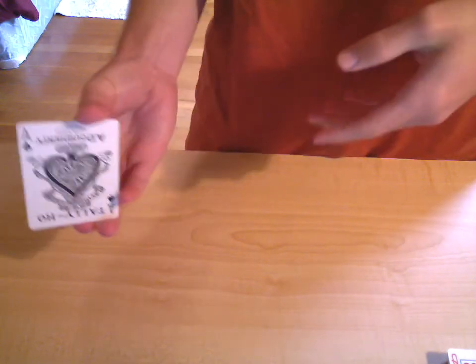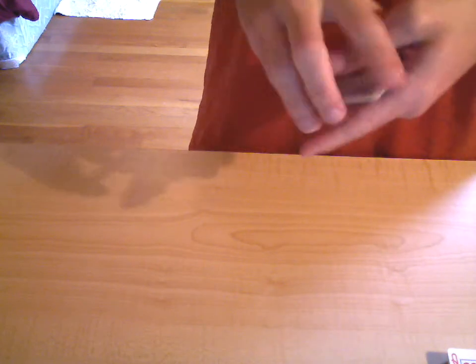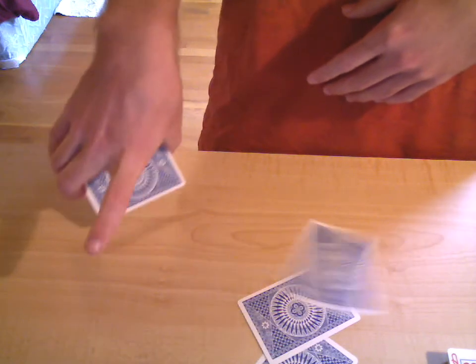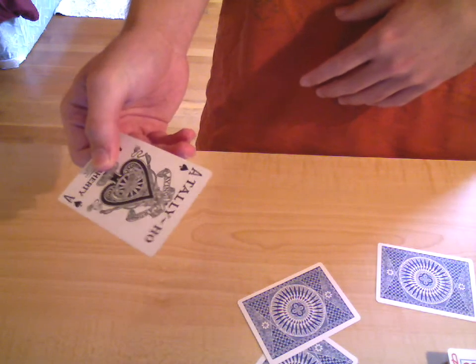So you want to do it fast like not 1. So you want to go not 1 take the top one throw it down. Not 2 throw it down. Not 3 throw it down. But 4 aces.